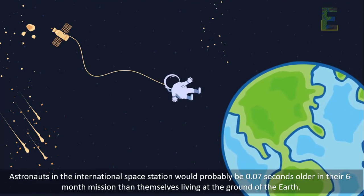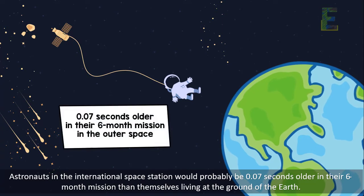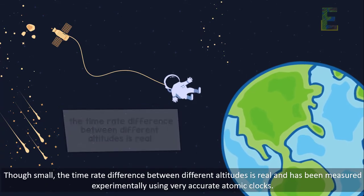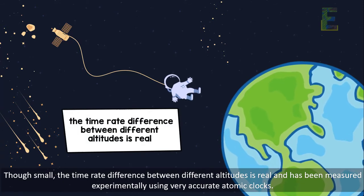Astronauts in the International Space Station would probably be 0.07 seconds older in their six-month mission than themselves living at the ground of the Earth. Though small, the time rate difference between different altitudes is real and has been measured experimentally using very accurate atomic clocks.